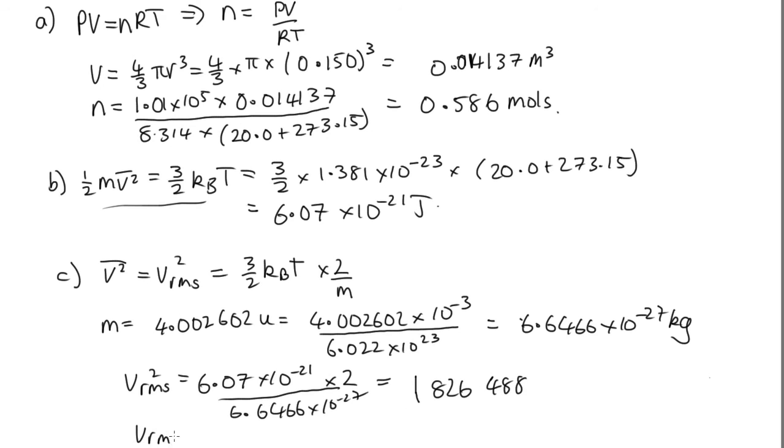And so to get the root mean squared, we take the square root of that. And that is equal to 1,351 meters per second.